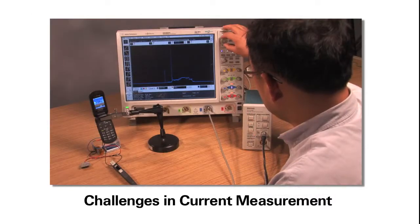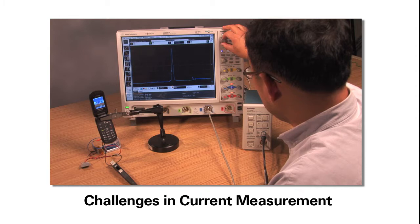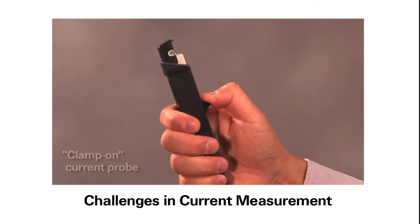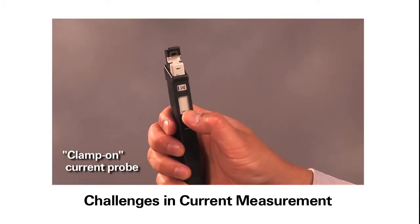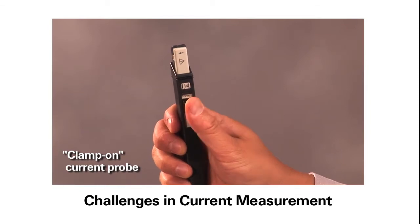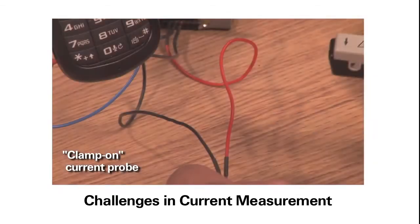Many engineers prefer to use an oscilloscope to measure current consumption of a device with respect to time. One way to measure current with an oscilloscope is to use a clamp-on type current probe to directly monitor the current going into the device.